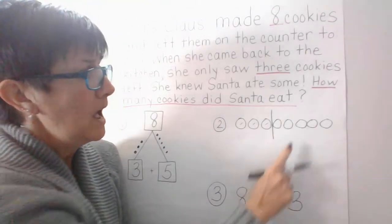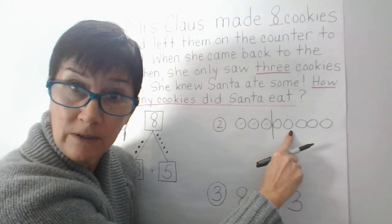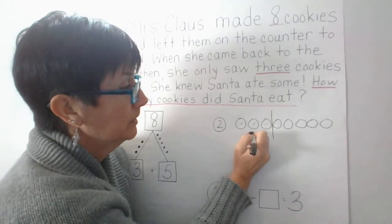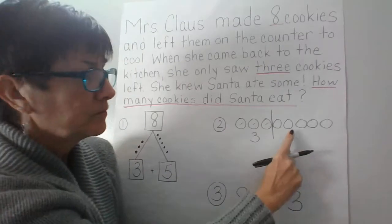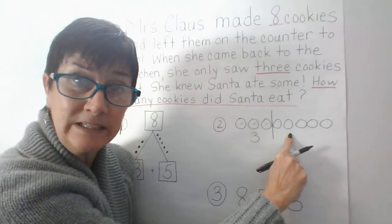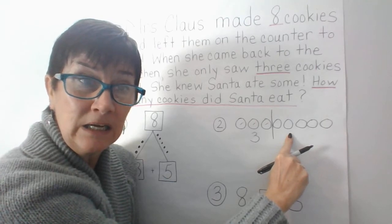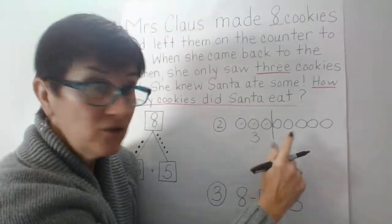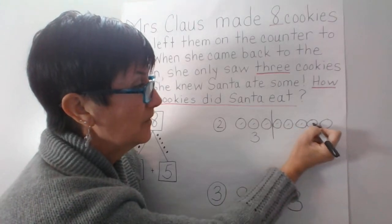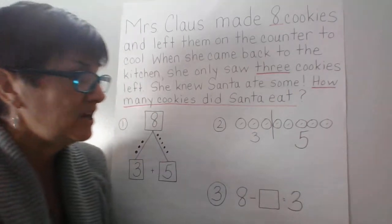These cookies on the other side of the break-apart line are the number of cookies that Santa ate. So we're gonna write the number three here. How many cookies did Santa eat? Jason? He ate five cookies. Very good — one, two, three, four, five. He ate five cookies. Excellent. Santa's still a piggy, isn't he?